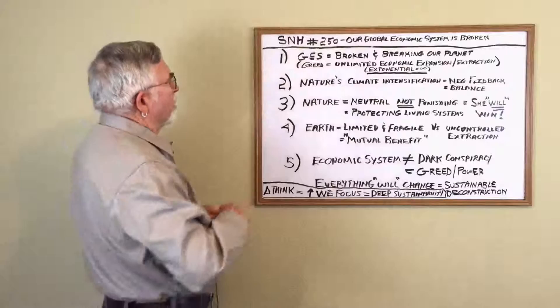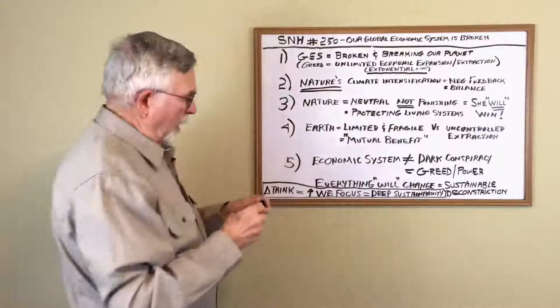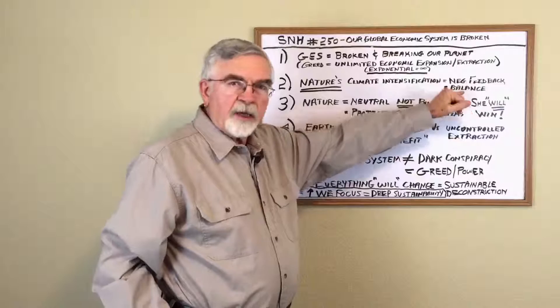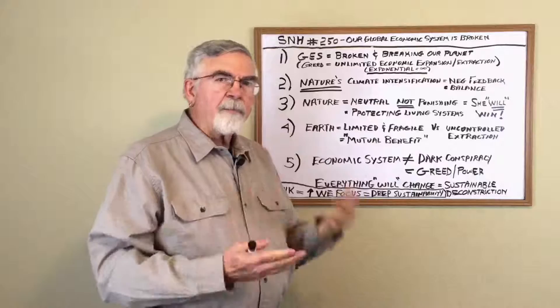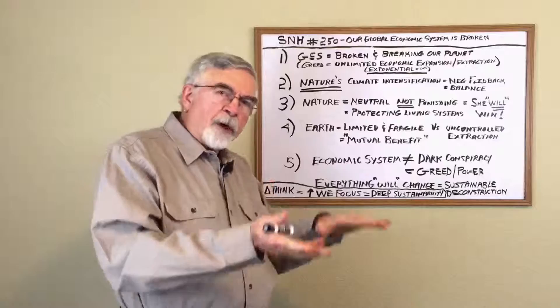The second big concept is that nature's climate intensification is the negative feedback that we're seeing for balance in nature. Nature's feedback systems are on autopilot. They're automatic. When some things change, the system automatically begins to bring everything back into balance.